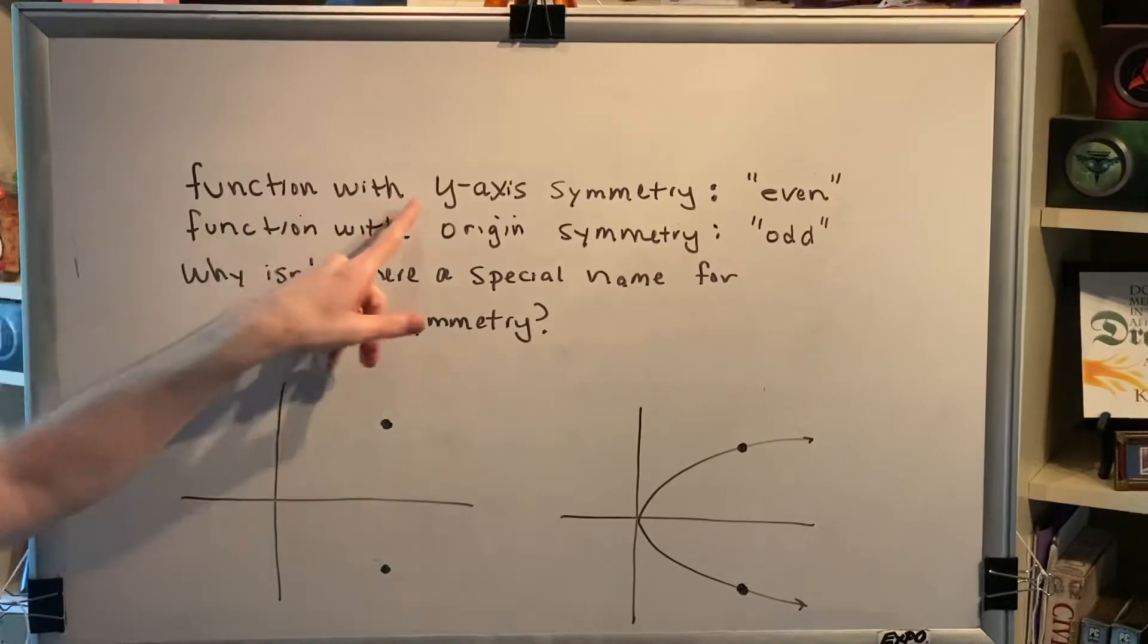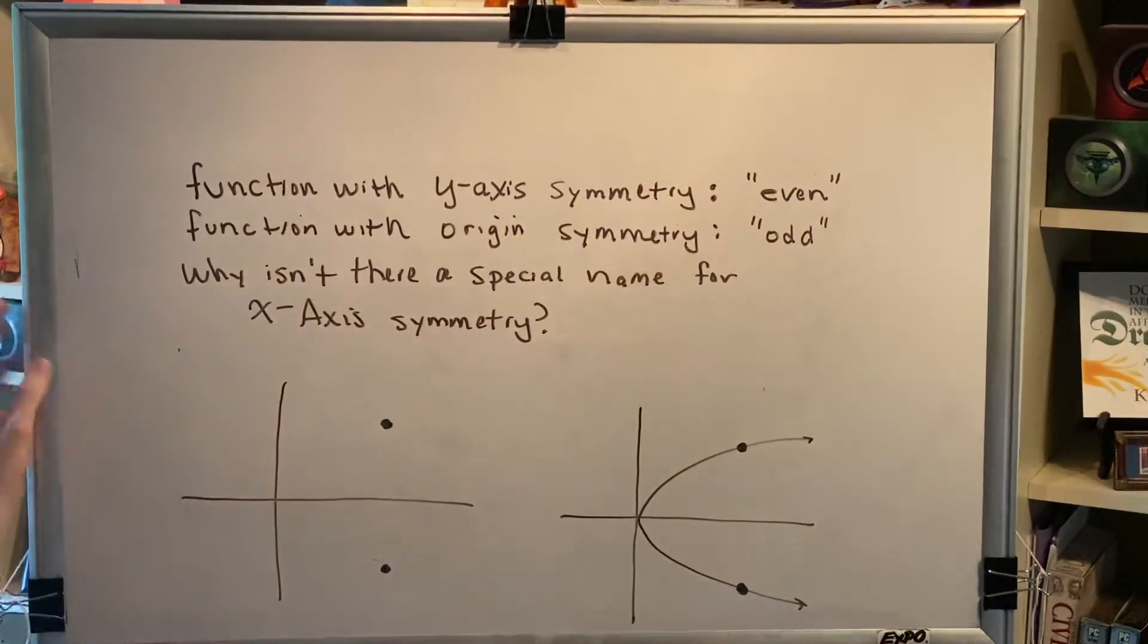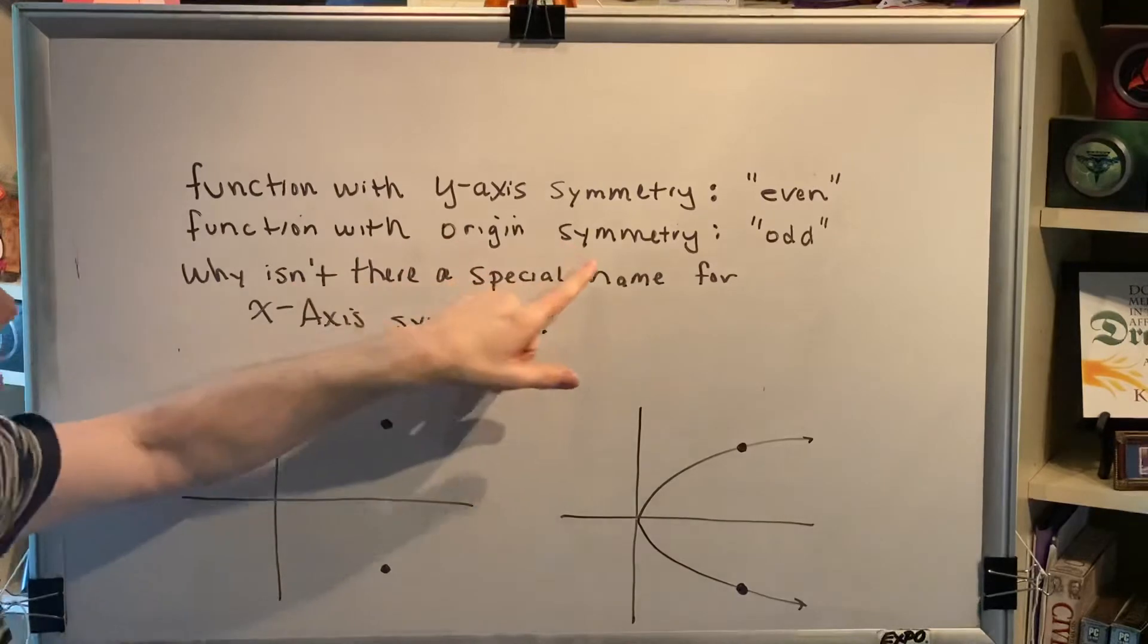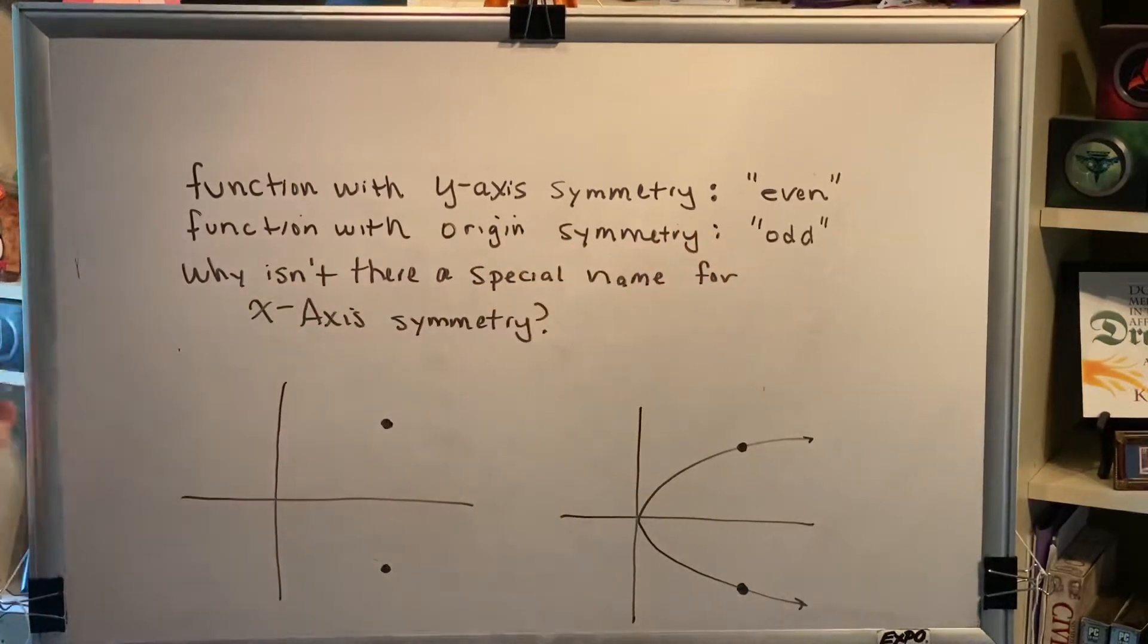If a function with y-axis symmetry is called an even function, and if a function with origin symmetry is called an odd function, why isn't there a special name for x-axis symmetry?